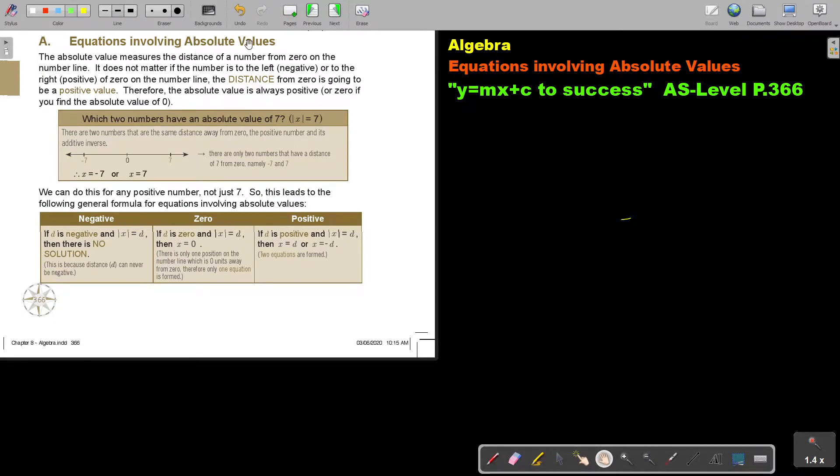Equations involving absolute values. The absolute value measures the distance of a number from zero on the number line. It does not matter if the number is to the left negative or to the right positive of zero on the number line. The distance from zero is going to be a positive value.